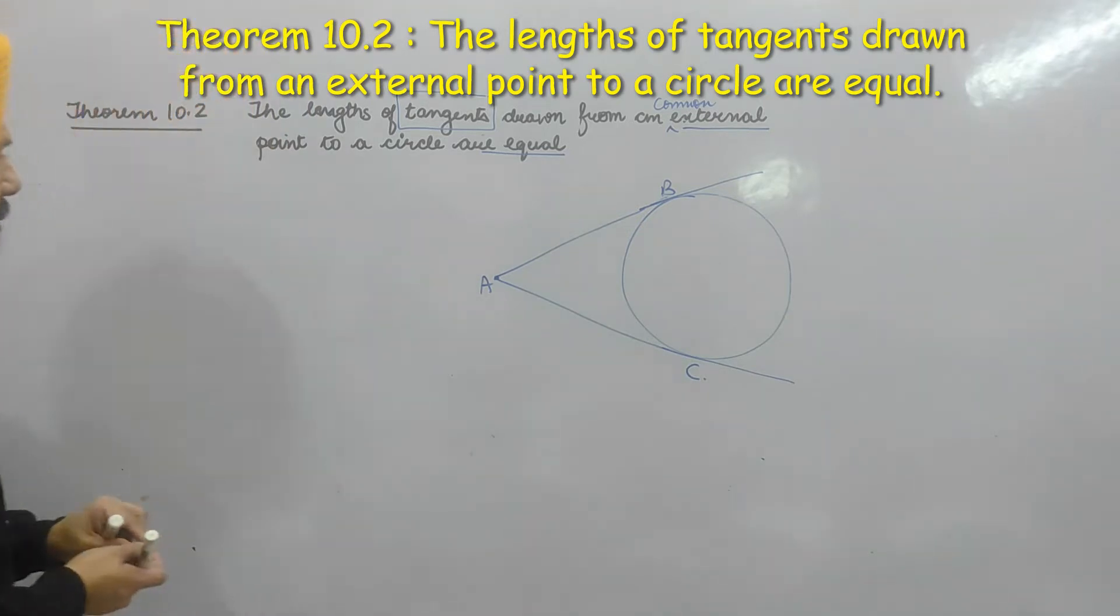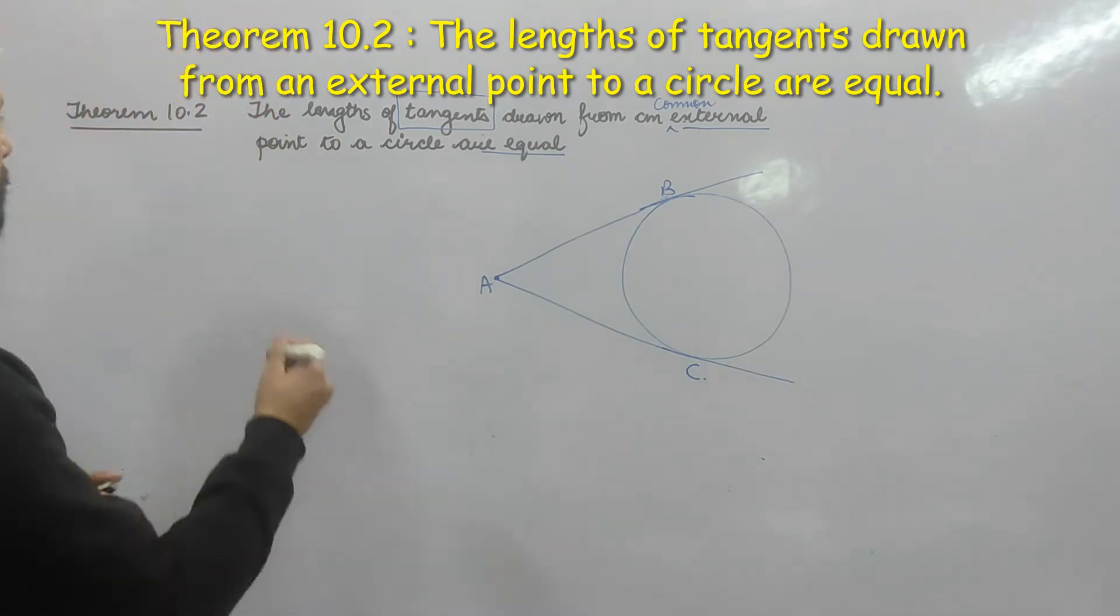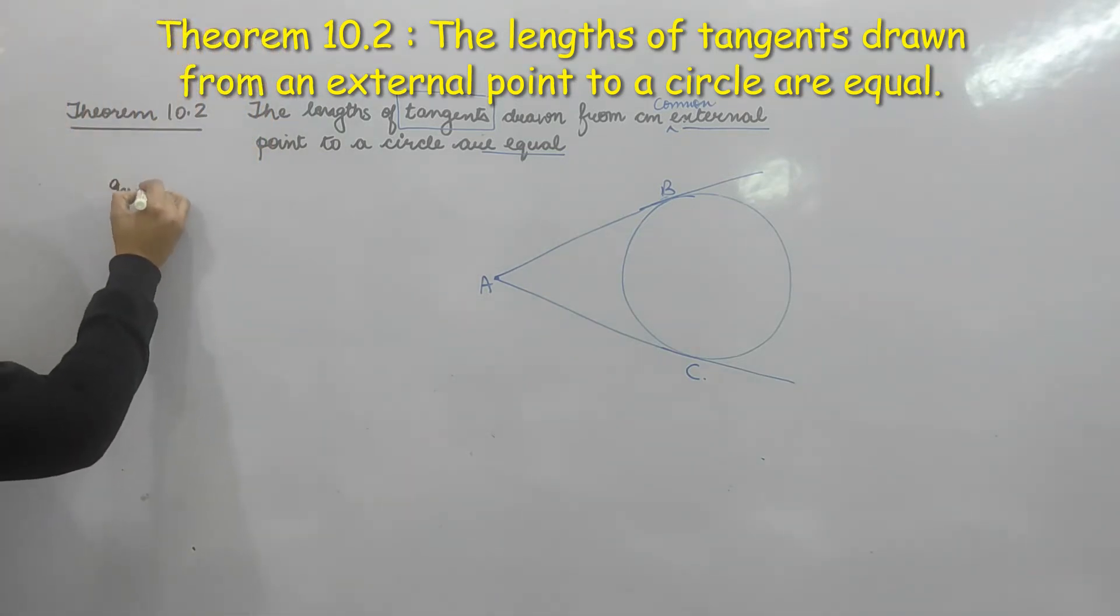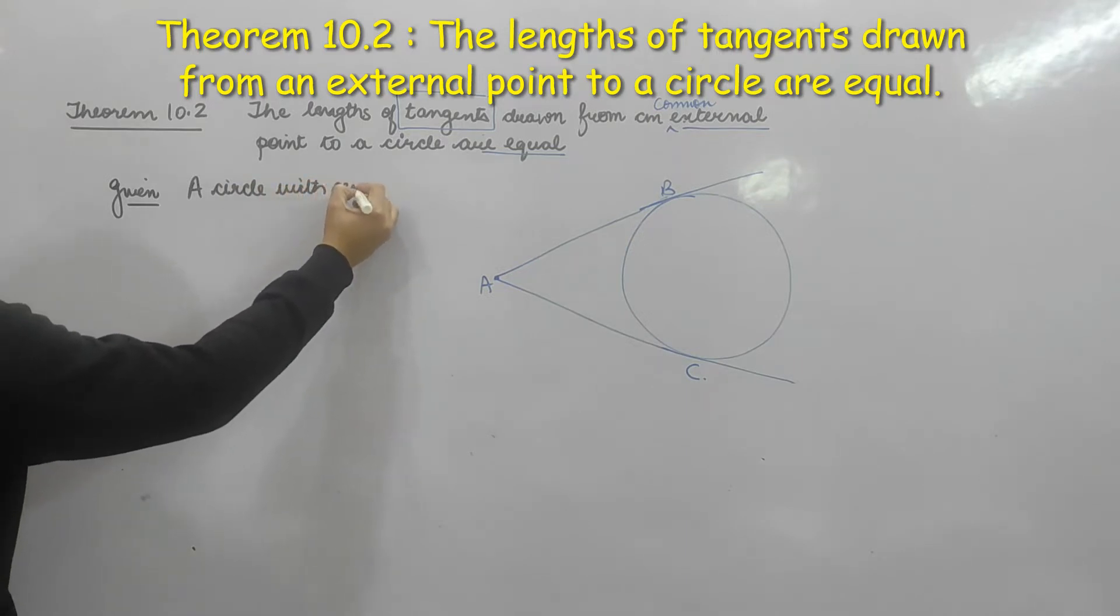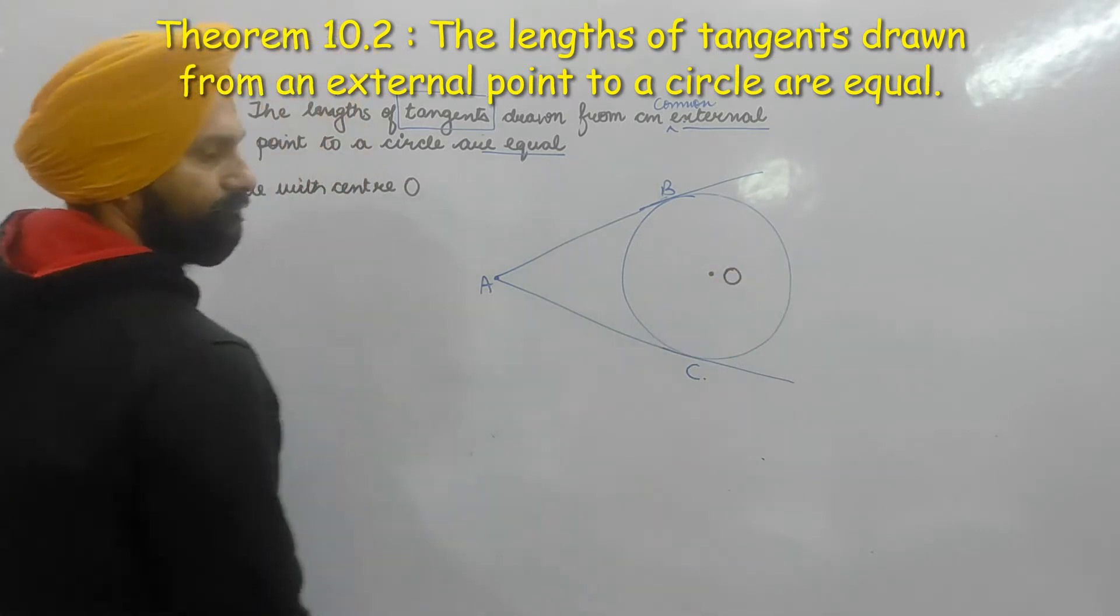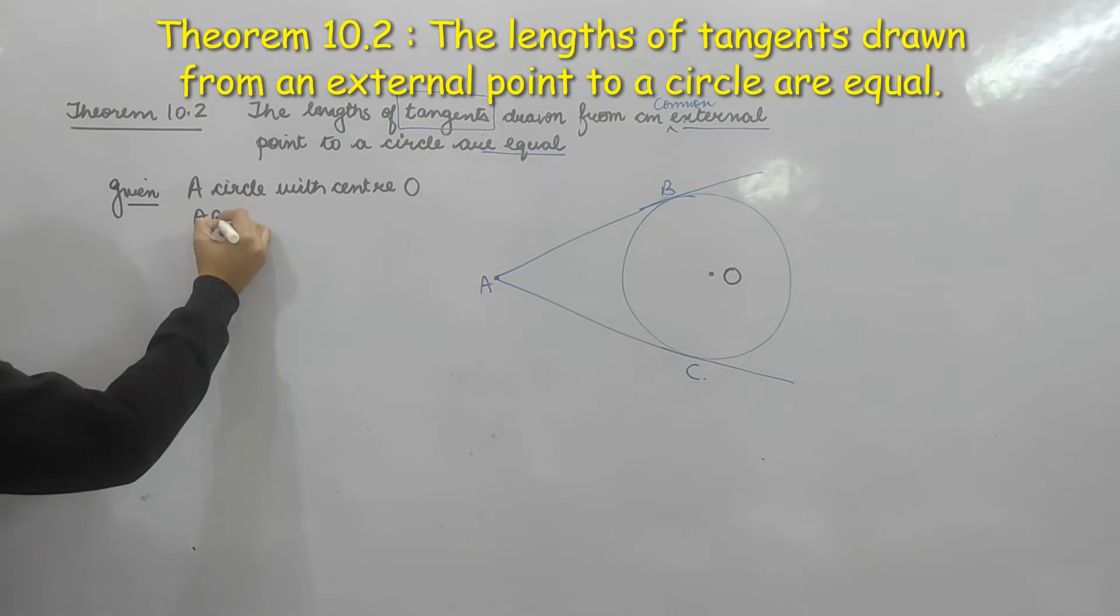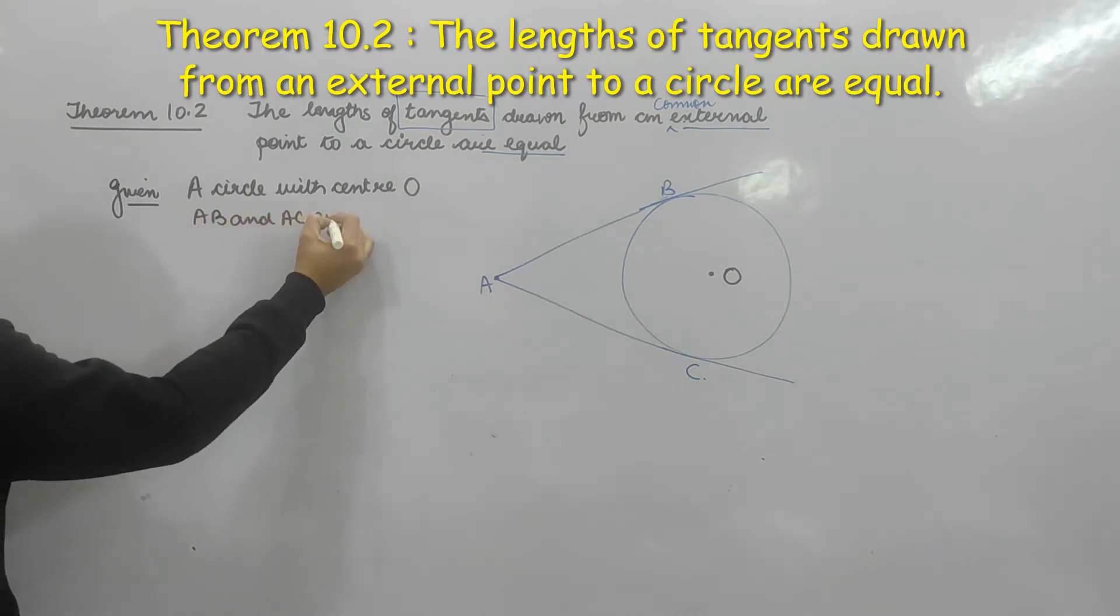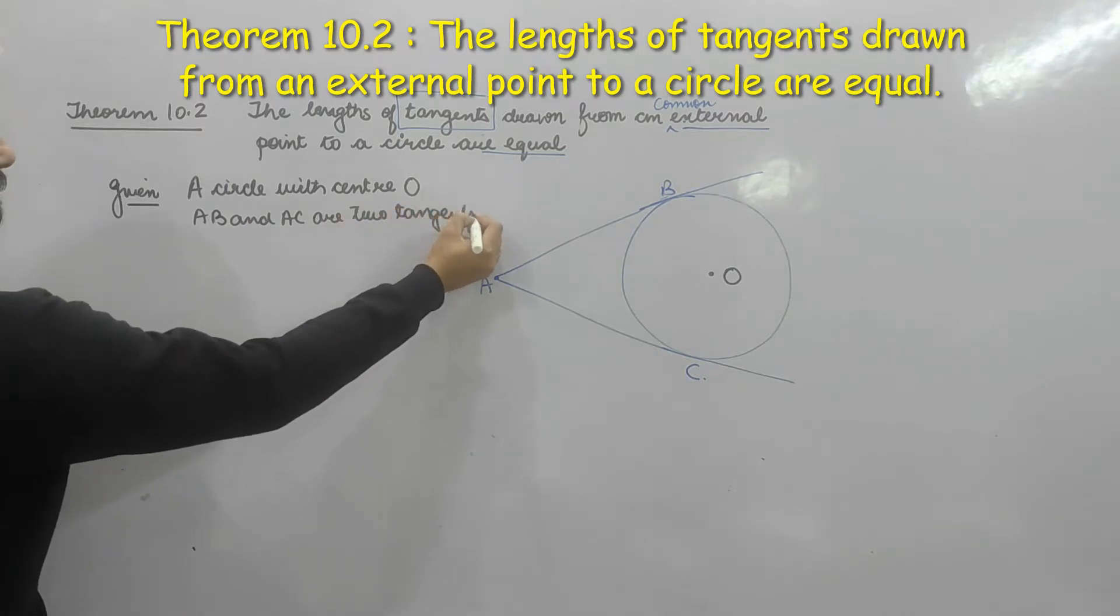So how we can write down geometry question? If you remember, we always start with given, to find, to prove and all. Given: a circle with center O.